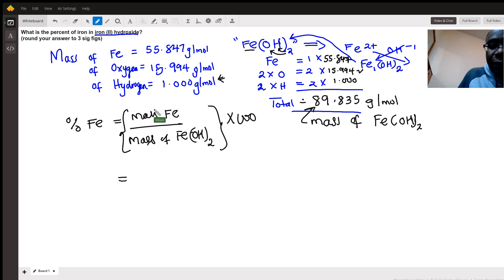Obviously, if you're considering one mole of iron(II) hydroxide, it's gonna have in it 55.847—that's the contribution of iron in the total mass. And then of course, the molar mass is 89.835 of the entire iron(II) hydroxide.